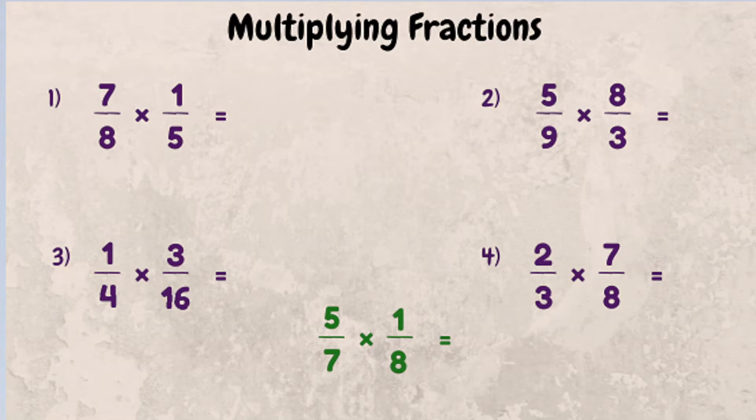Let's look at an example here. What is 7 eighths times 1 fifth? We're going to take 7 times 1, which will give us a new numerator of 7. 8 times 5, which is 40. 7 fortieths is our answer.